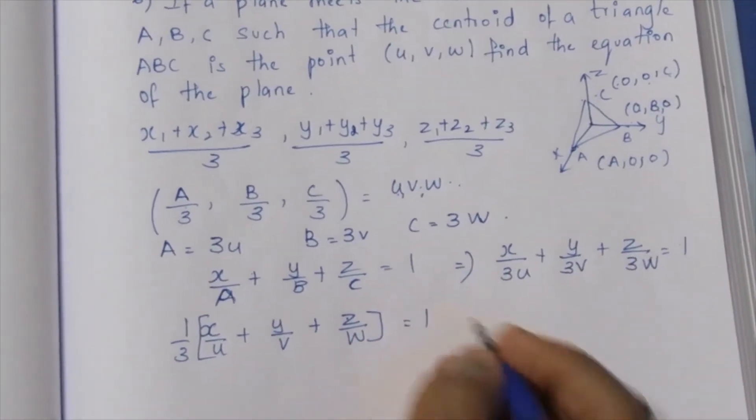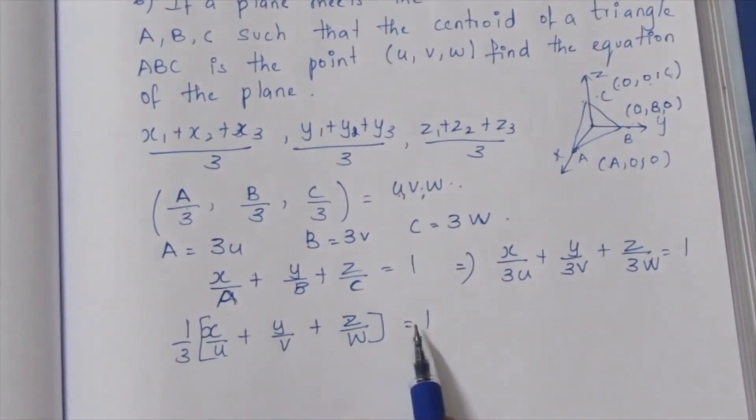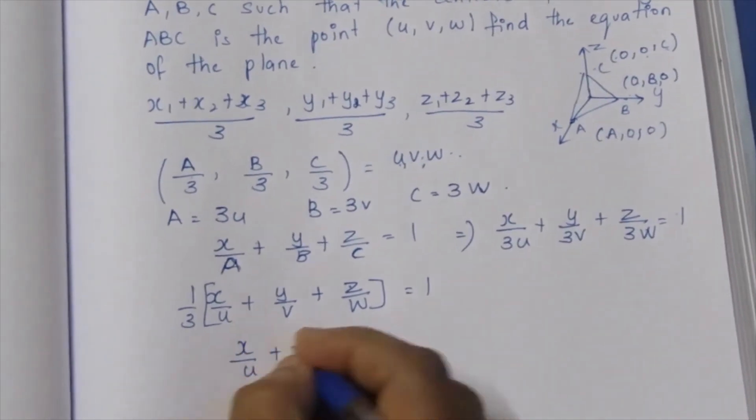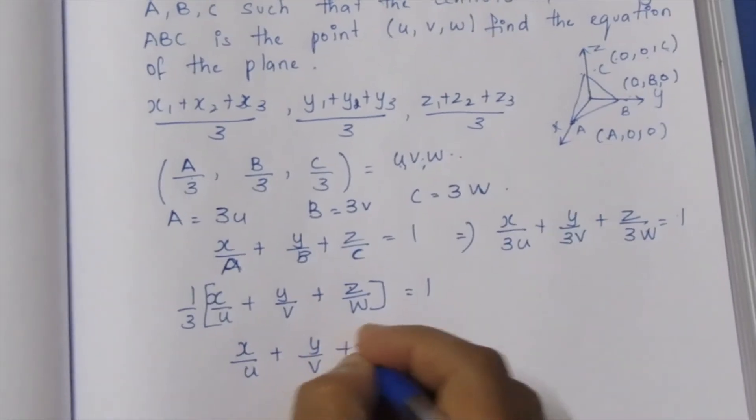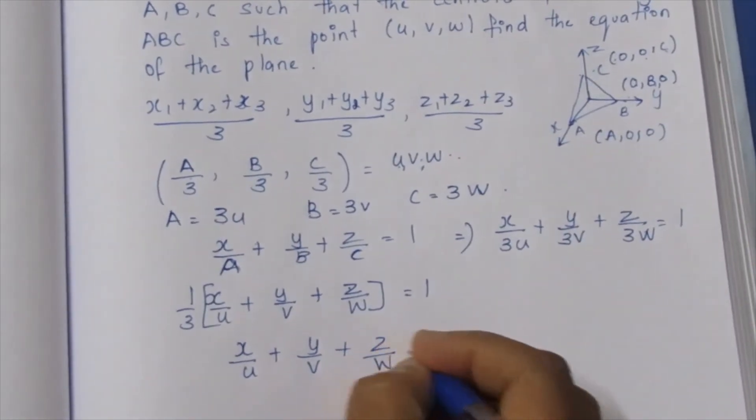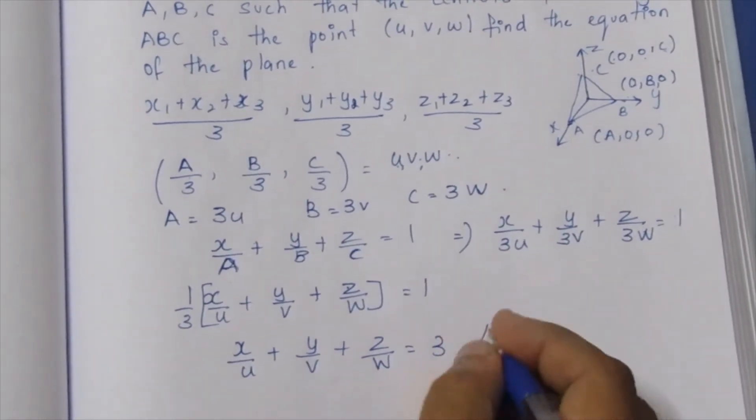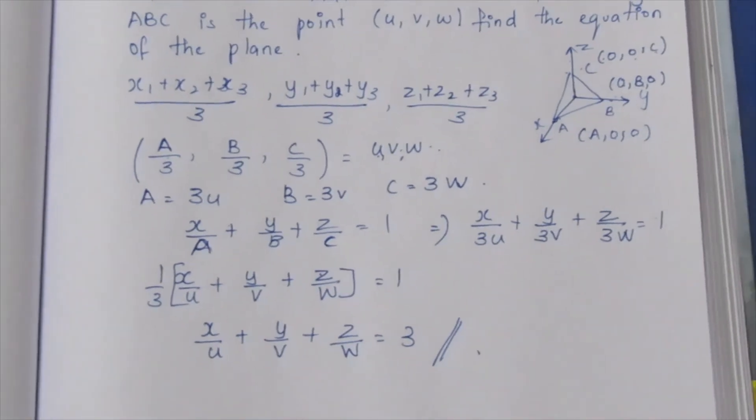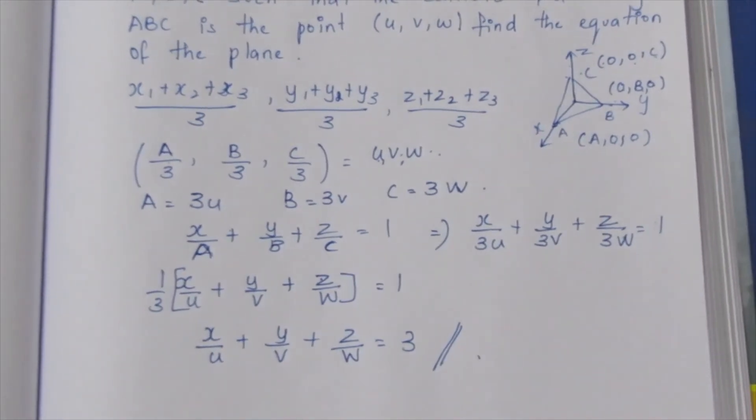Multiplying both sides by 3: x/u + y/v + z/w = 3. This is the equation of the plane. Very easy sum using the centroid formula. Thank you.